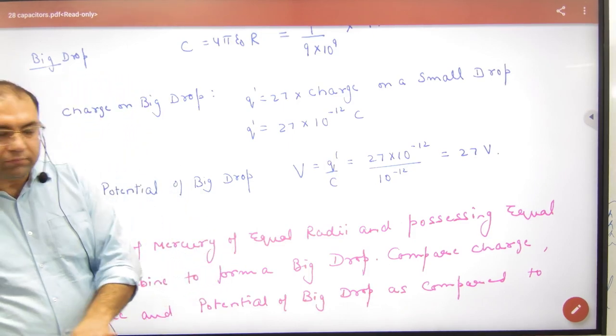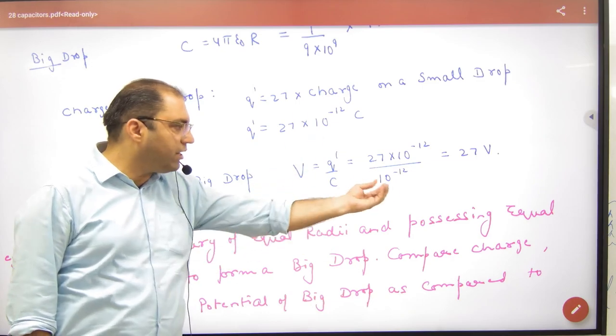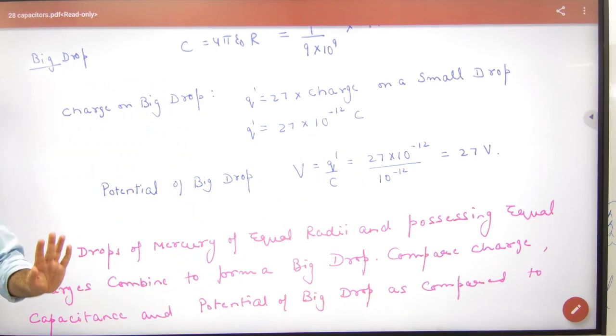So in this chapter, if you know c and q, divide. What will happen? Corresponding potential. Clear here?